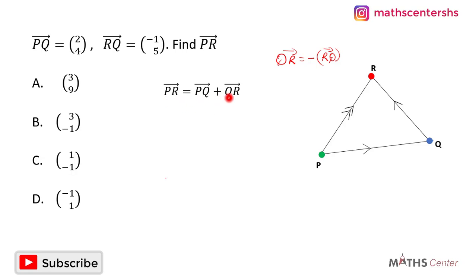Vector QR is equal to negative of the vector RQ. We can see from what we have here that PR is equal to PQ plus QR. But in the question we have RQ, and we have seen that the vector QR is equal to the negative vector RQ.